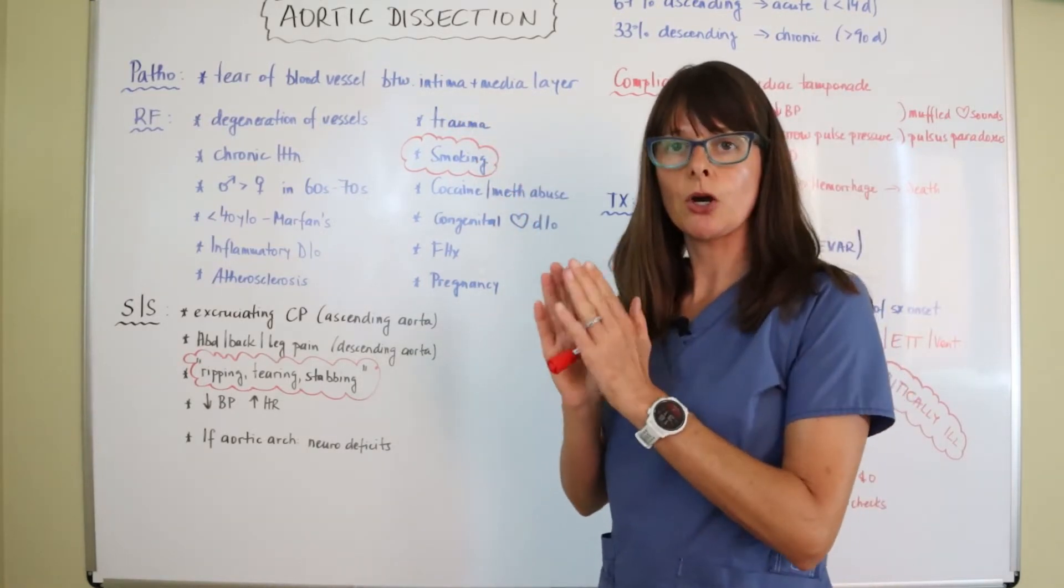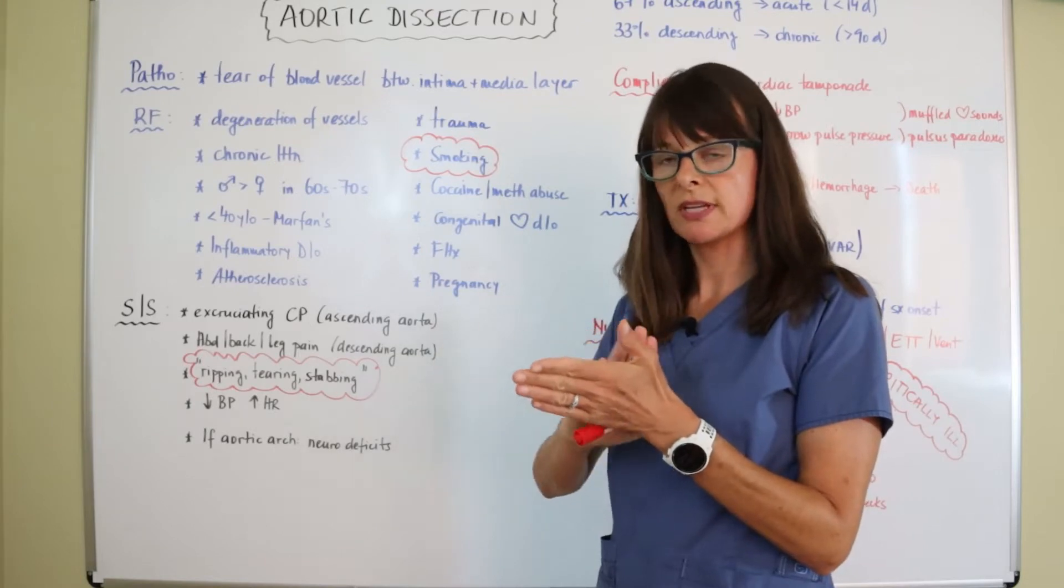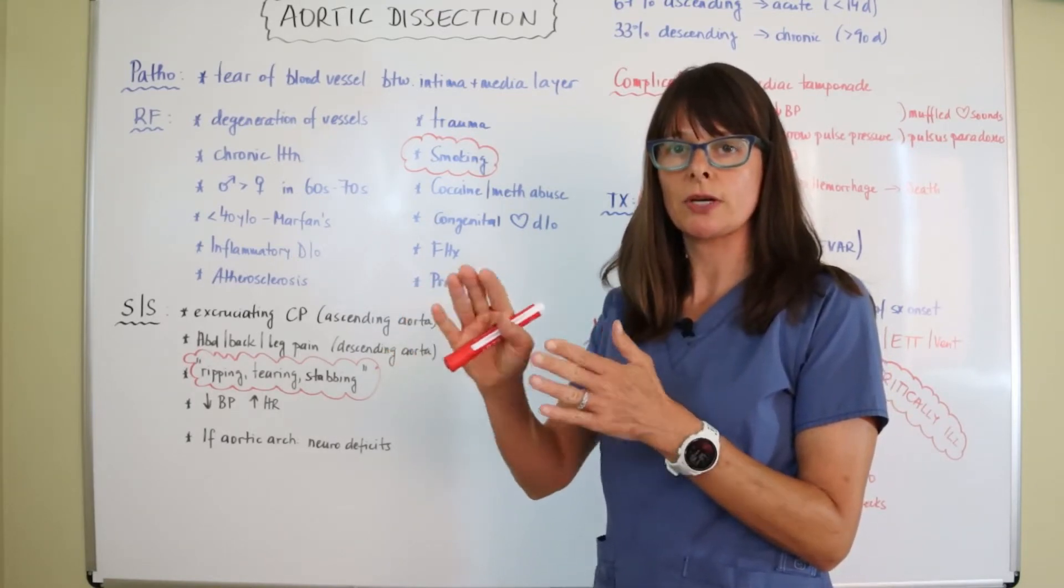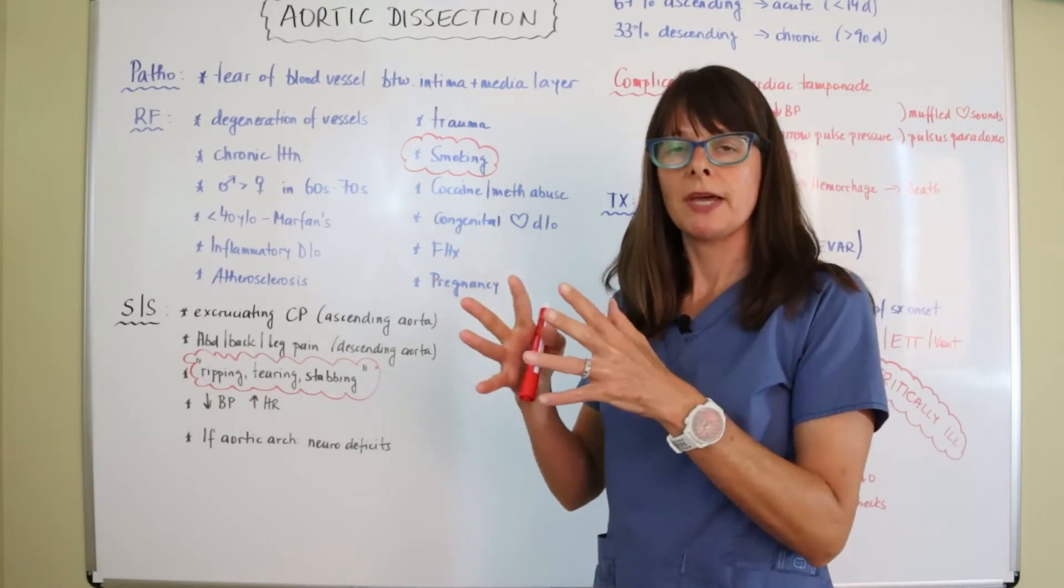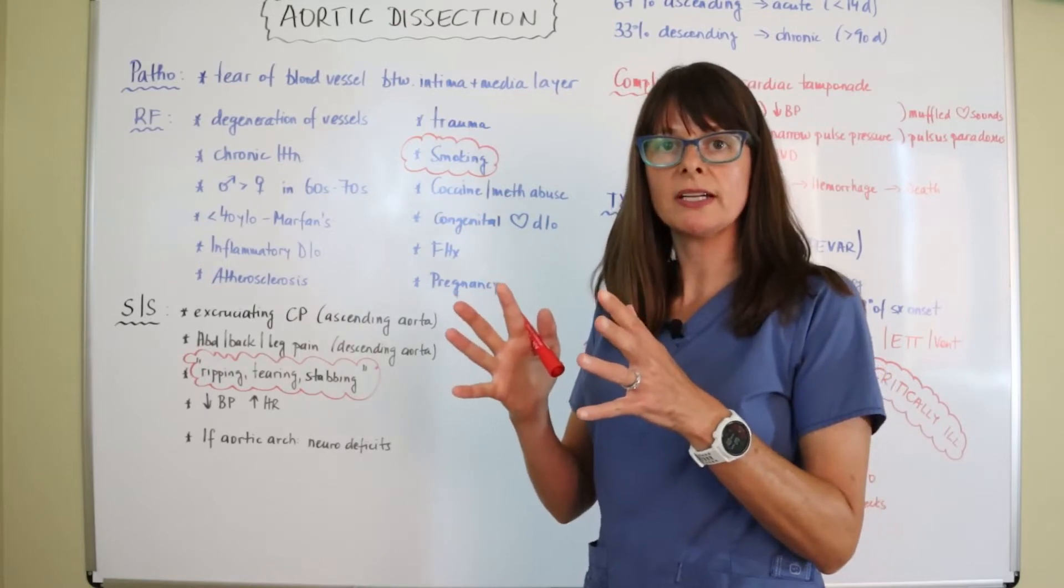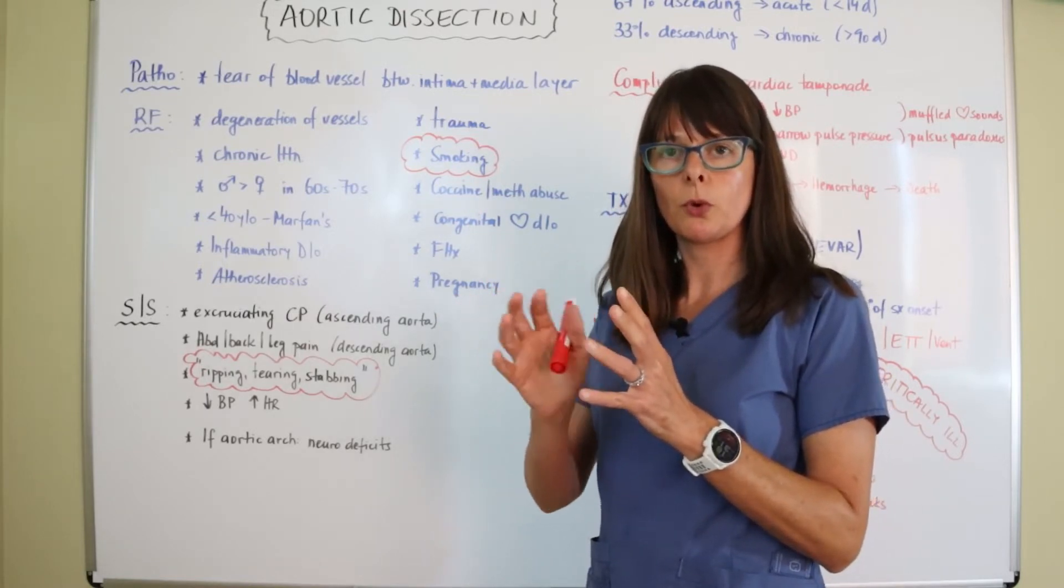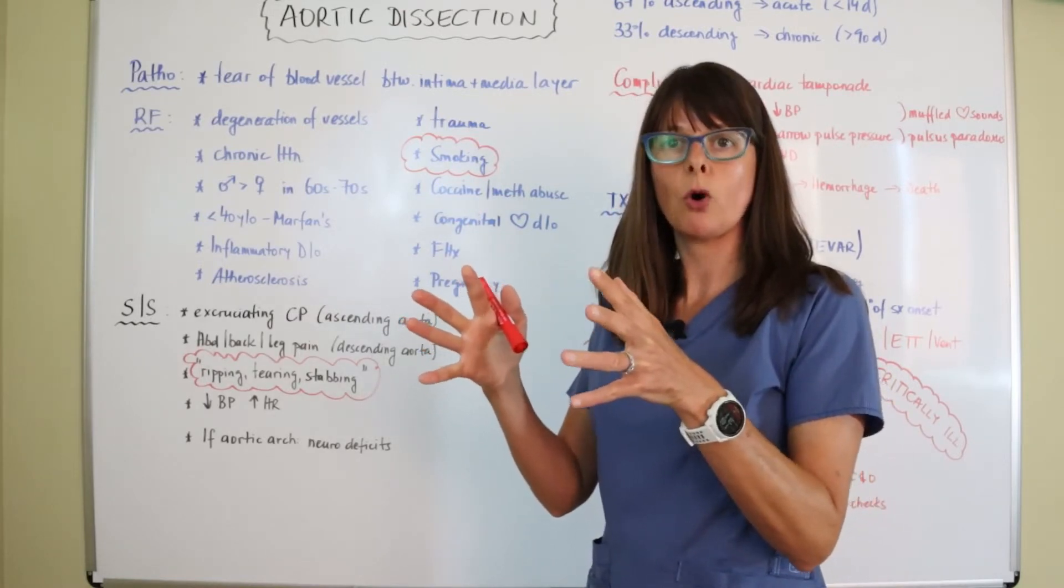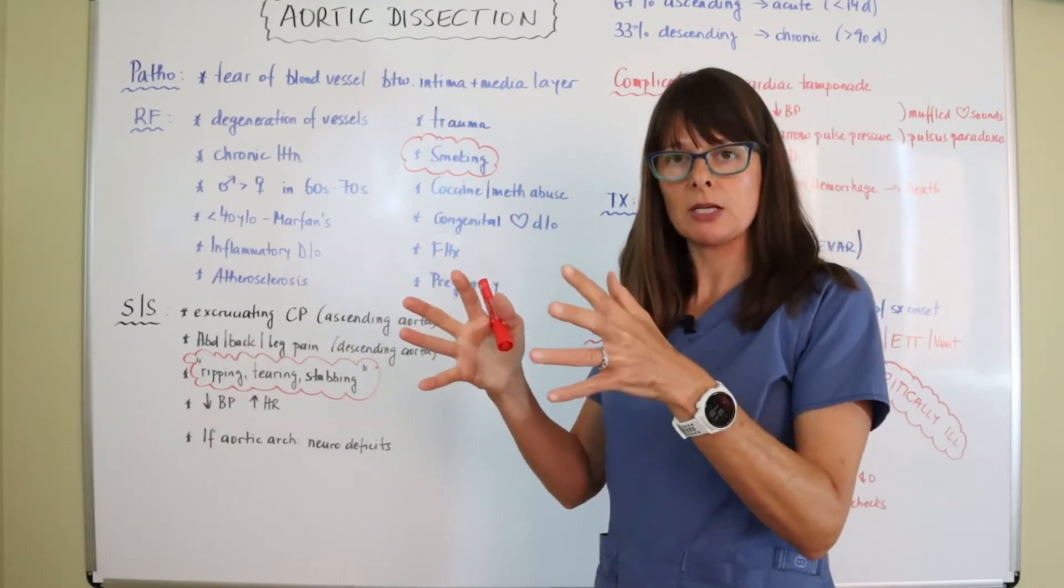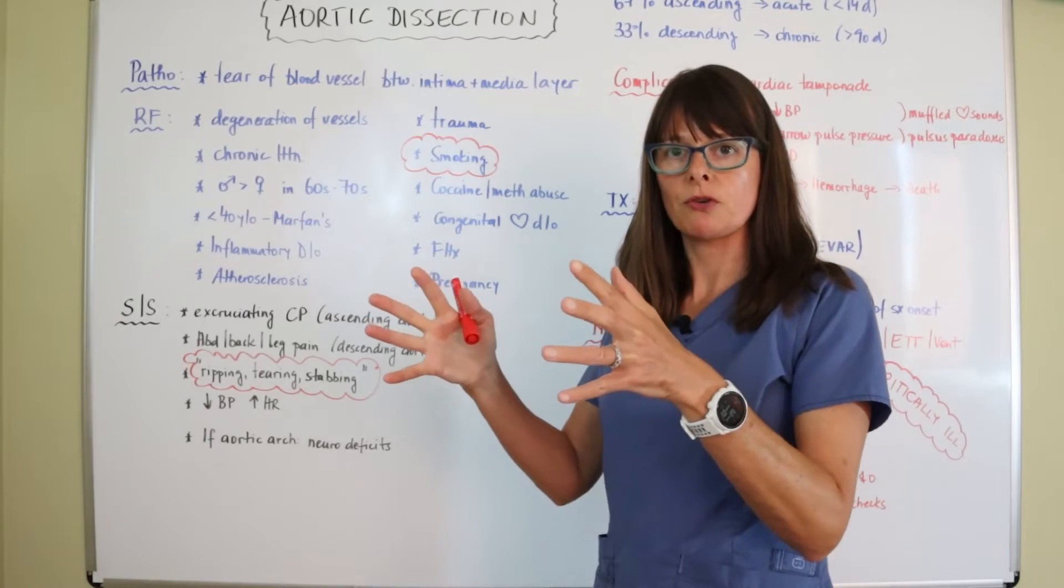Remember that every artery has three layers, which is the innermost, the intima, then the media, and then the external. So there's these three layers that allow for the elastic recoil and also kind of protect the blood from flowing through. These three different layers hold the whole blood vessel together and then allow for expansion as the blood pressure fluctuates.